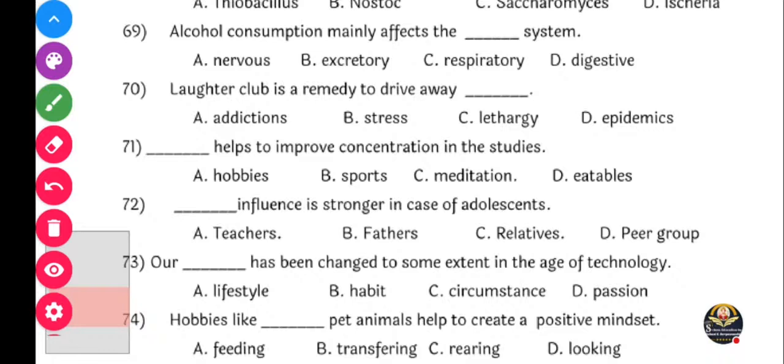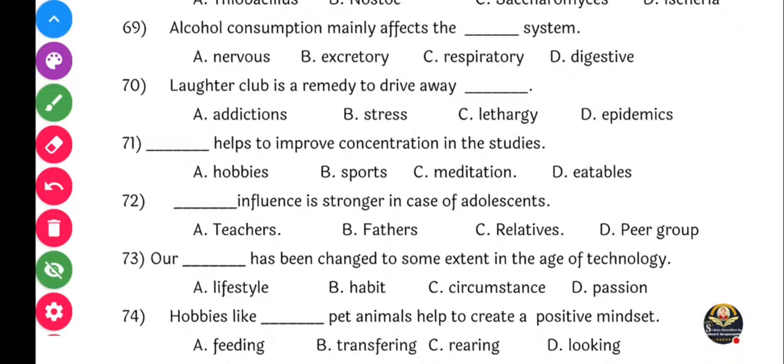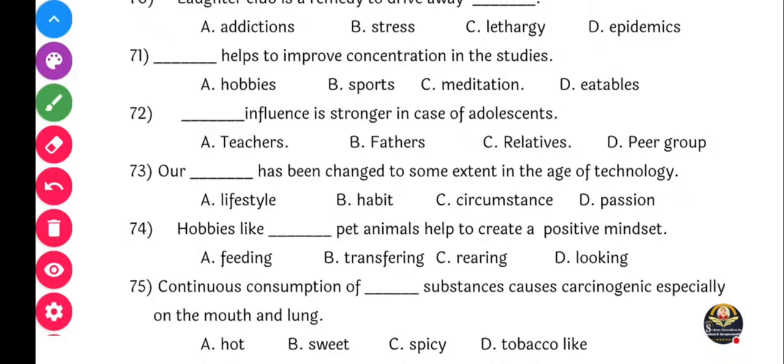Next question: Dash influence is stronger in case of adolescence. Options: Teachers, fathers, relatives, or peer group. Very good, very good. Yes, peer group is the right answer, option D.